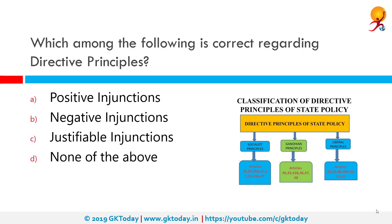Which among the following is correct regarding Directive Principles? The correct answer is positive injunctions. A positive injunction refers to an injunction that requires a positive act on the part of the defendant. The Directive Principles of State Policy are rights defined in Part 3 of the constitution, applied irrespective of race, place of birth, religion, caste, creed or gender. They are enforceable by the court subject to specific restrictions.